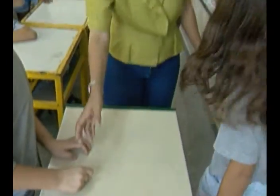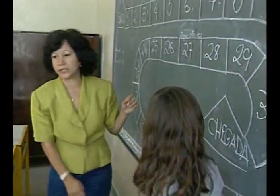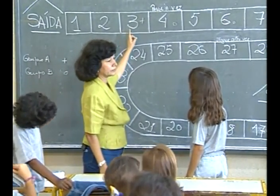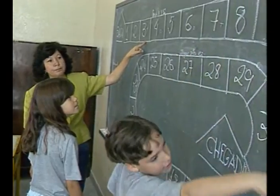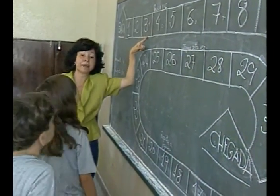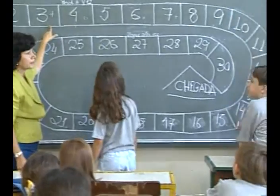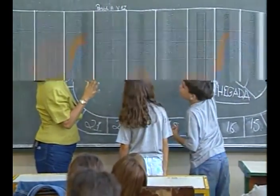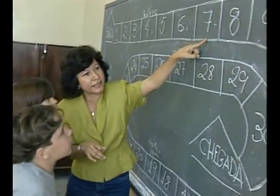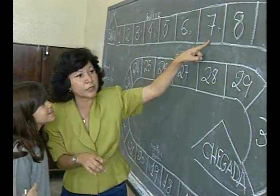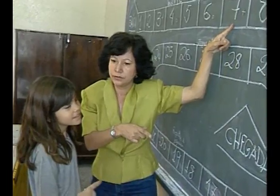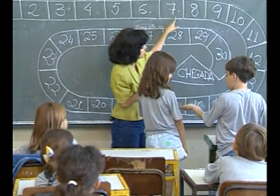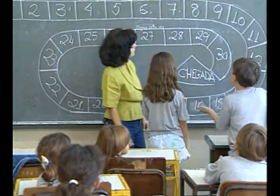Stop — how much did it land on? 5. And where is Joana? At 3. Where is she going? Who can say now? To 12. To 12? How much did she roll? 5. She was here, right? So why does she go to 12? 7 plus 5 is 12. Plus 5 gives? 12. Let's see — pass the turn. Let's see if it will be 12, 6, or 7. Shall we count 5?